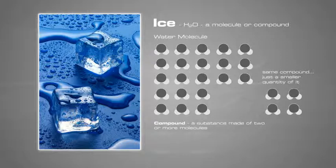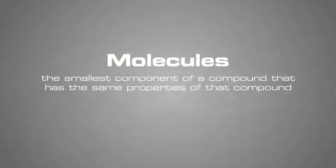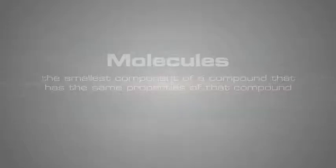We can break the compound down into a smaller compound, but it still remains the same compound, made up of the same molecules, just on a smaller scale. Molecules are then the smallest component of a compound that has the same properties of that compound.